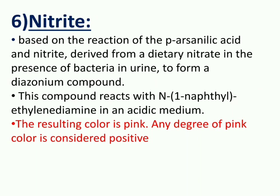Test for nitrite is based upon the reaction of para-arsanilic acid and nitrite derived from dietary nitrate in the presence of bacteria in urine, to form a diazonium compound. This then reacts with N-(1-naphthyl)ethylenediamine in acidic medium. The resulting color is pink — any degree of pink color is considered positive.